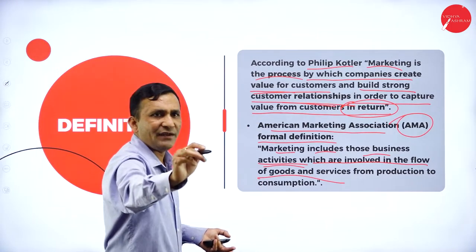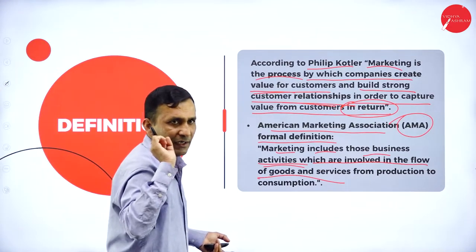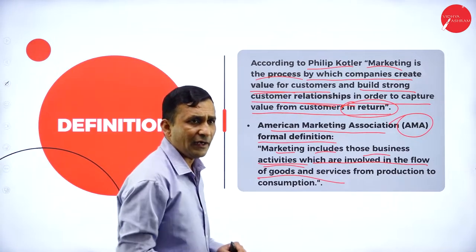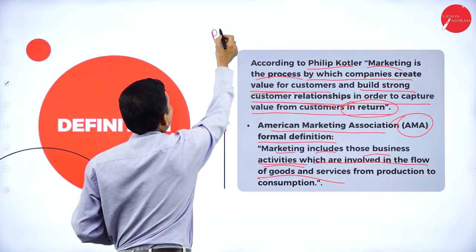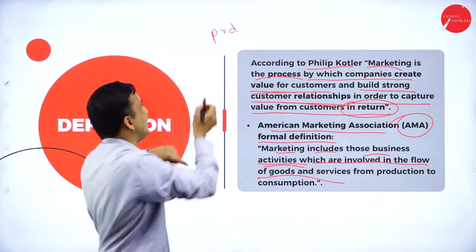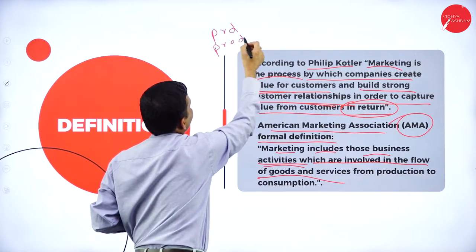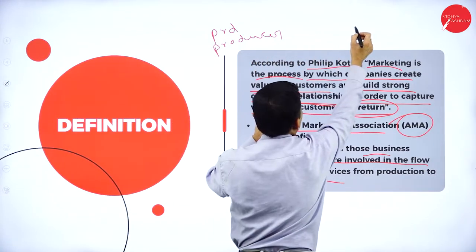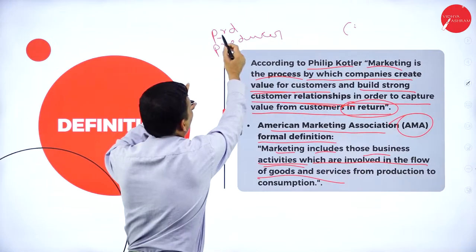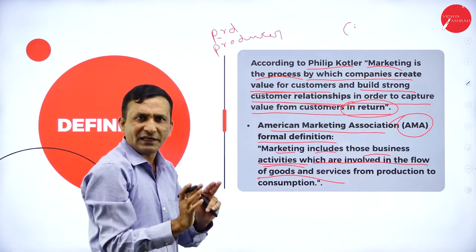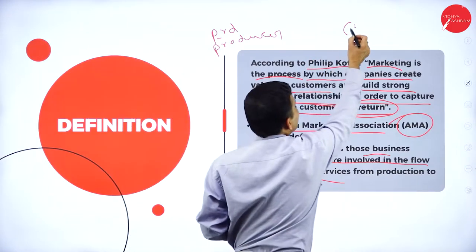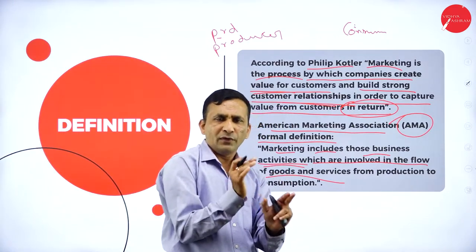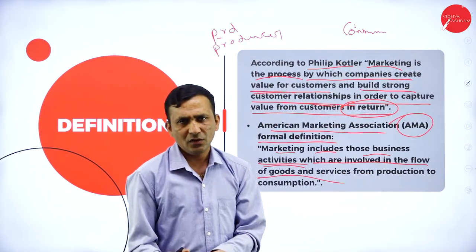Once you identify what customers are giving priority — that is value identity — you capture the value, then provide and fulfill the customer's value. The product is ready with the producer — that is the production point. From producer to end consumer, you need to sell. That is called consumption. The consumption is completely based on the consumer's role.